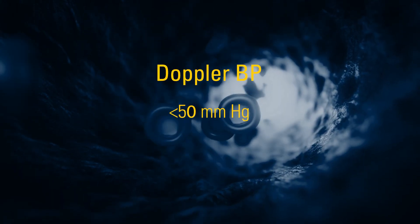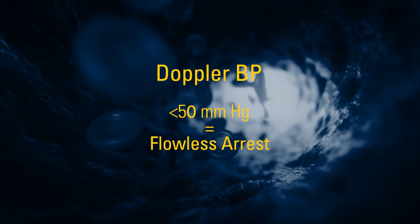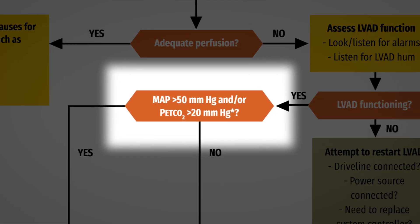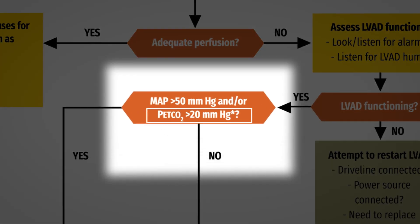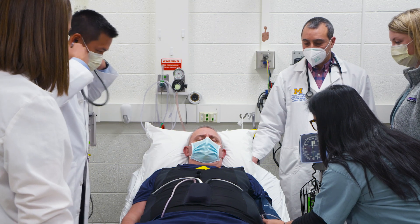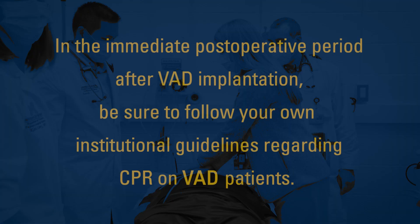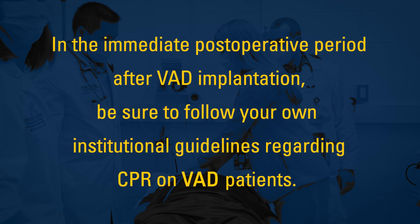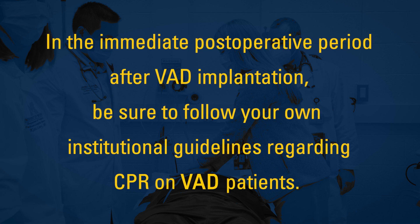A Doppler blood pressure of less than 50 millimeters of mercury indicates a flowless arrest with poor forward flow and inadequate tissue perfusion. If blood pressure is less than 50, begin CPR. If the patient is already intubated and their end-tidal CO2 is less than 20 millimeters of mercury, this is also indicative of poor tissue perfusion and is used as a decision point to begin CPR. Studies have shown that it is safe to perform CPR on VAD patients without dislodging the VAD itself. If it is in the immediate post-operative period after VAD implantation, be sure to follow your own institutional guidelines, as some centers will prohibit CPR in the first week or two after implantation.